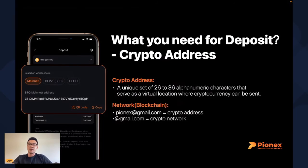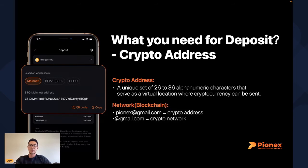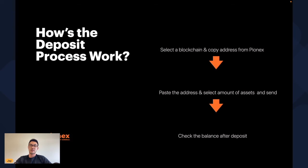First things first — what do you need for a deposit? The most important thing is the crypto address, which is basically a set of 26 to 36 alphanumeric characters that serves as a virtual location where your cryptocurrency can be sent. The next important thing is the blockchain network. Think of your crypto address like your email — like Pinex — but you also need a service provider, like Gmail.com. That Gmail.com is essentially the blockchain network.